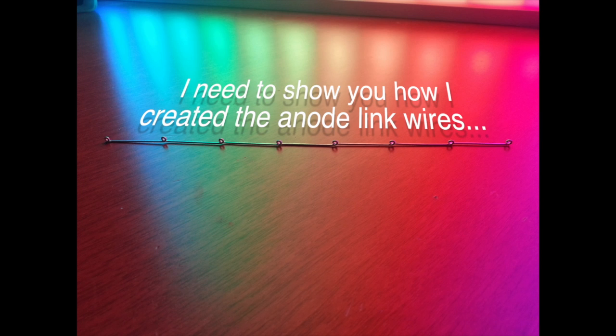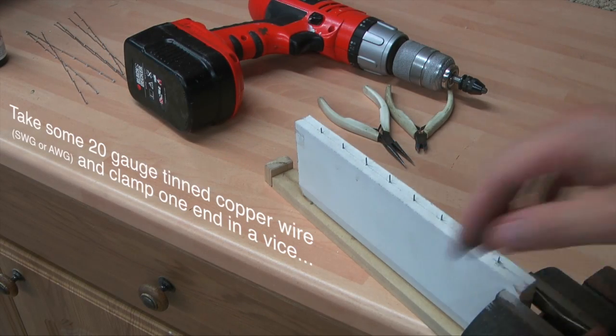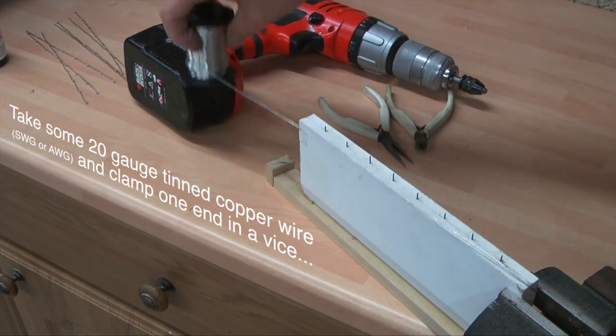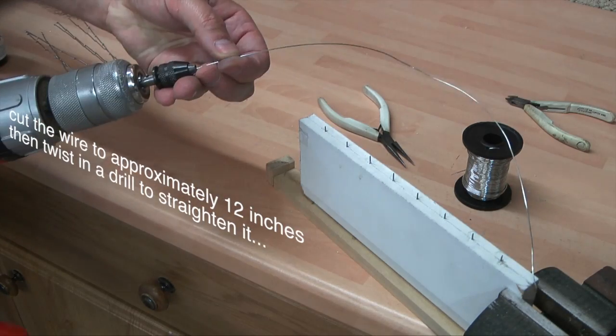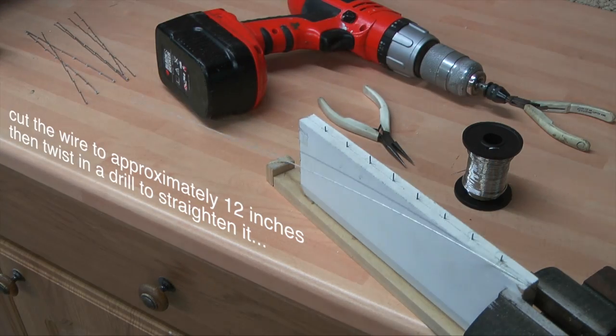In this final part of the video I'm going to show you how I made the anode link wires. We take some 20 gauge tin copper wire and clamp one end in a vice and then cut to approximately 12 inches in length. Using an electric drill the wire is then straightened by twisting it.